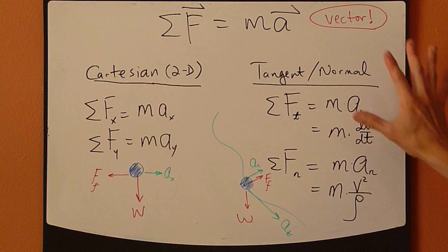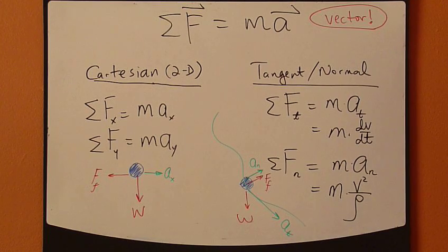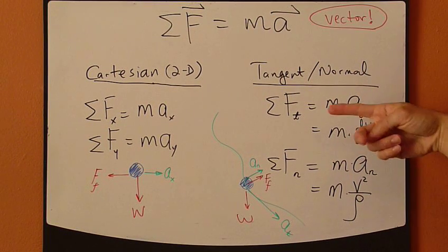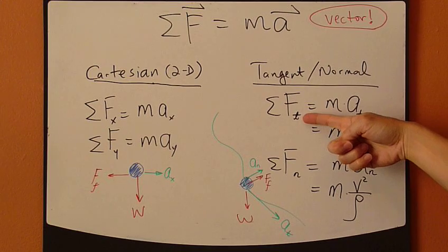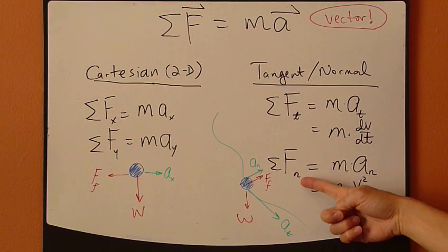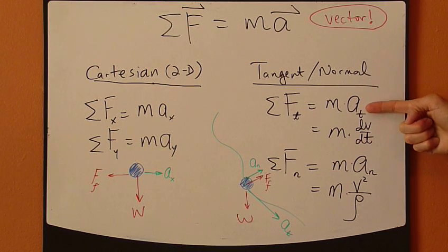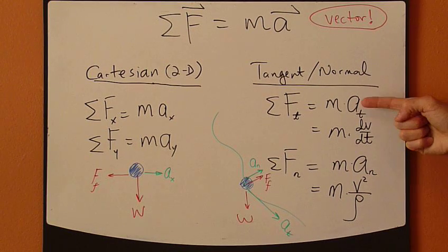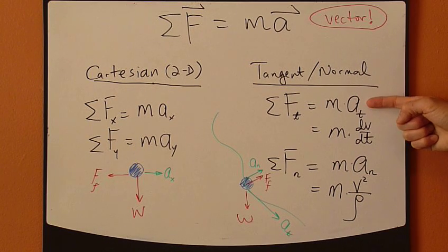In a normal coordinate system, you apply the second law the same way, in tangent direction and normal direction. And then the acceleration is in tangent component and the acceleration here is in normal component.